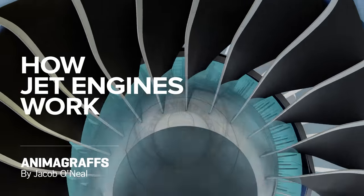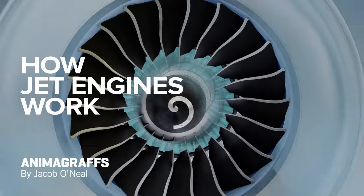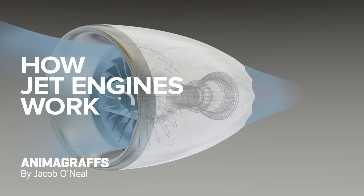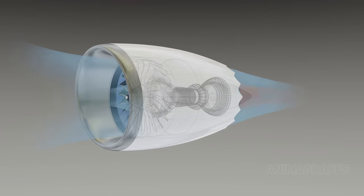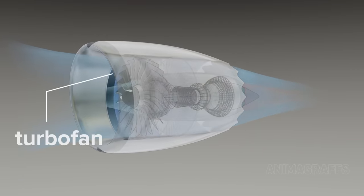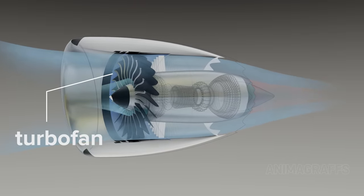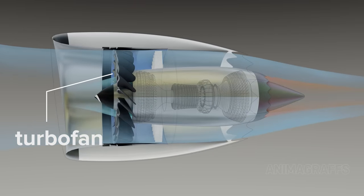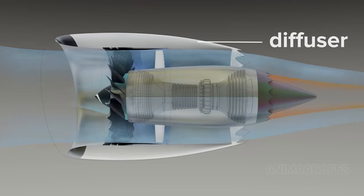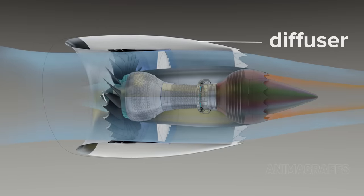I'm Jake O'Neill, creator of Animagraphs, and this is how jet engines work. Most jet-propelled airplanes use a turbofan design. The turbofan can be thought of as a high-tech propeller inside of a duct called a diffuser, driven by a gas generator.